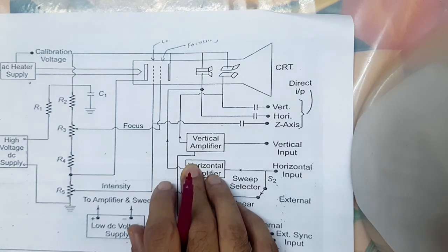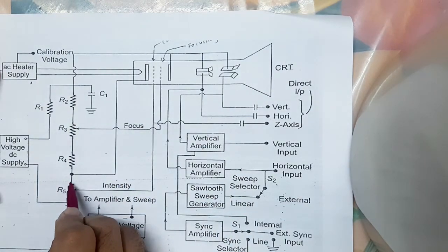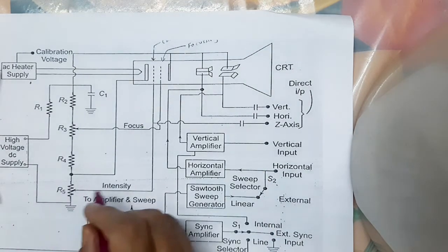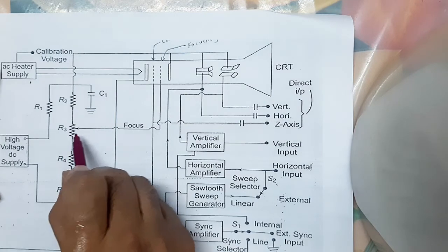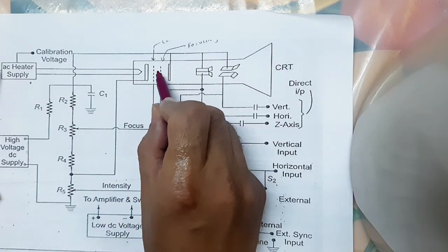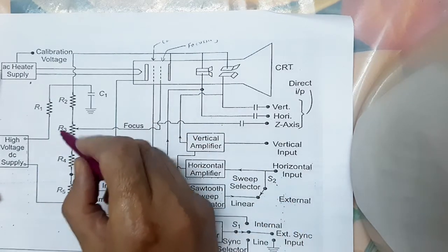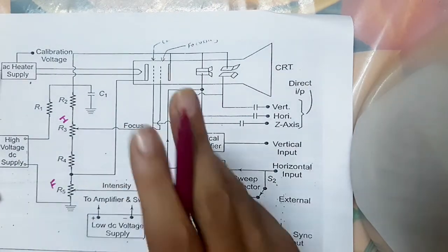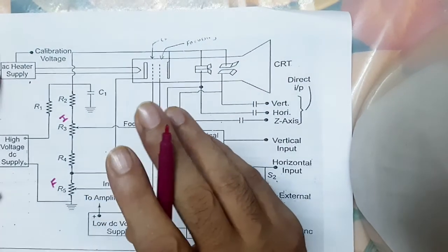This is our intensity control. If we increase or change the voltage here, more voltage is given to the control grid, so we can increase or decrease the intensity. Similarly, R3 is connecting here so we can change the focusing — we can focus the spot on the screen of the CRO. So there are two variable controls: the intensity control and the focusing control. These intensity and focus control knobs are given on the front panel of the CRO.